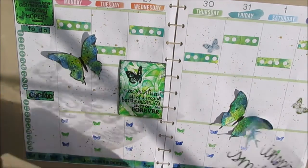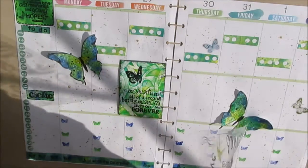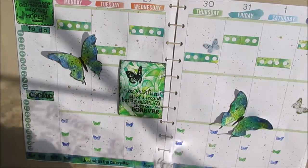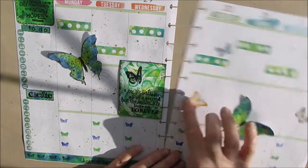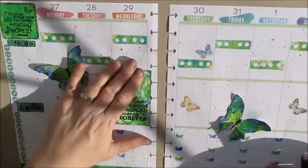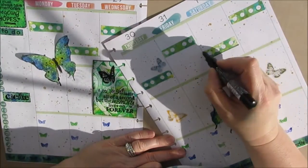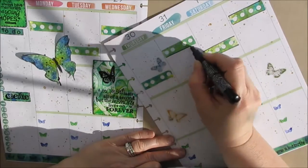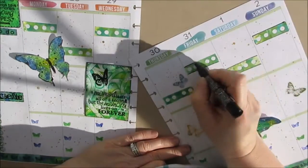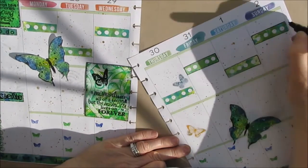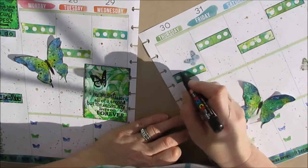Then amongst some of my dollar store stickers there, I actually had some butterflies. And they were in the teal and the blues and the green colors. So I thought, I'm just going to stick them on this spread. I haven't used this, I'm going to use this now. Now I'm just checking to make sure that the Posca pen did not leak through.